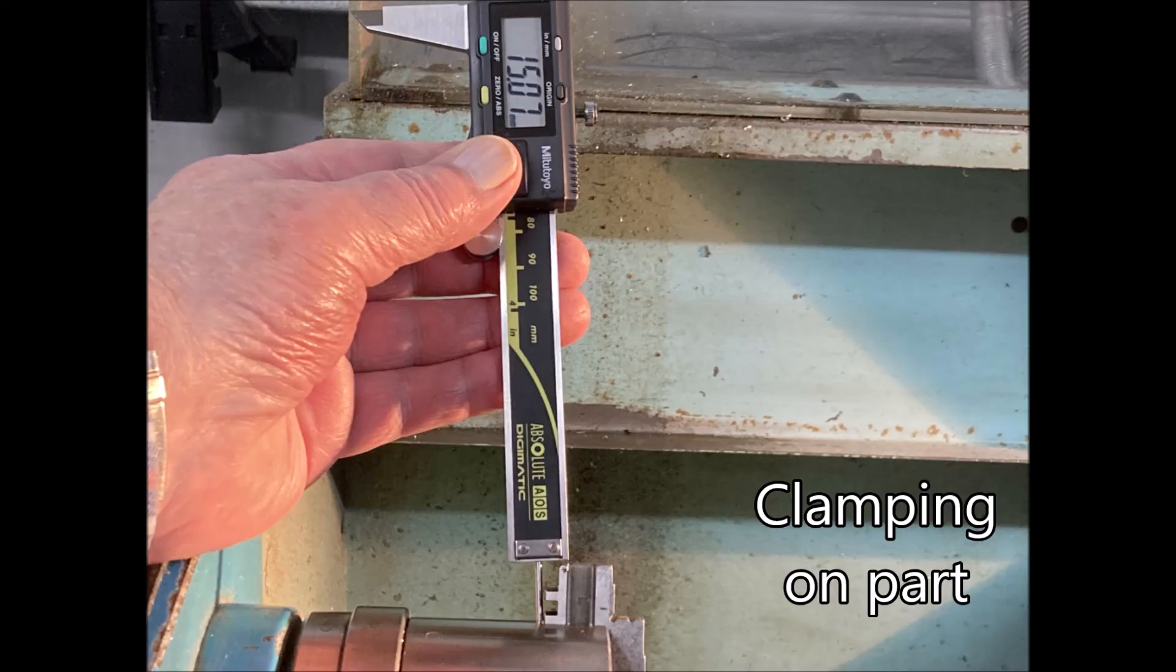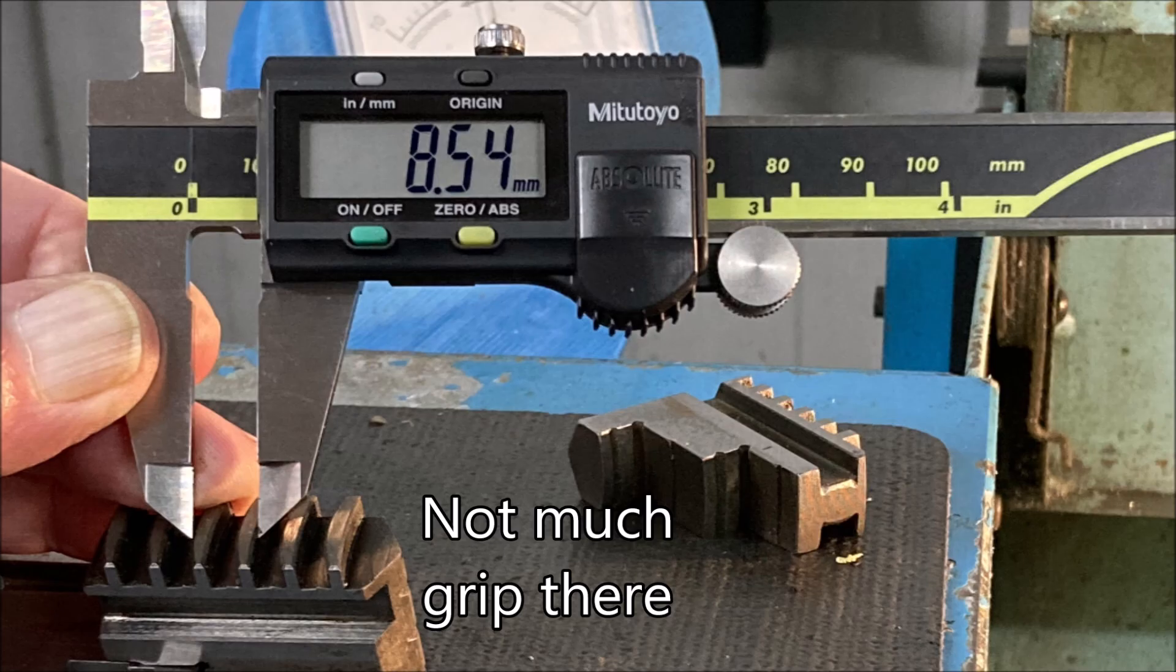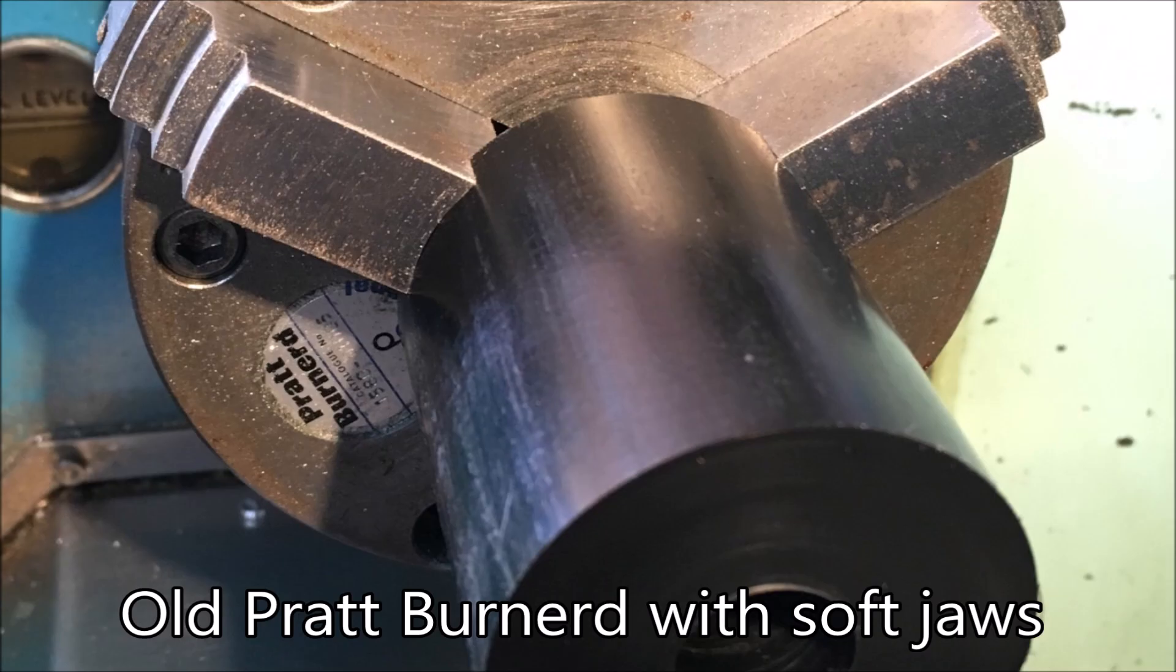To get an idea of how much jaw was in the scroll plate, I measured it here clamping on the part, and then I measured it this way with the jaw just pulling out of the scroll. The difference was about eight and a half millimeters, and you can see it really doesn't leave much of the teeth engaged in the scroll.